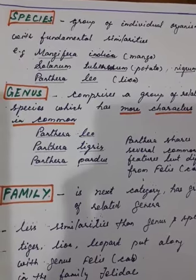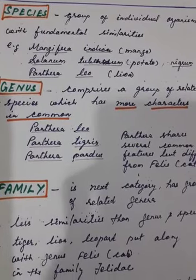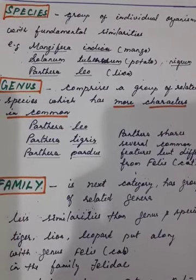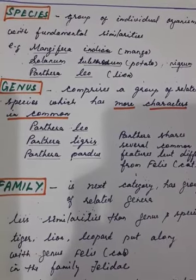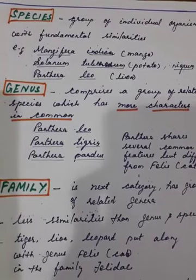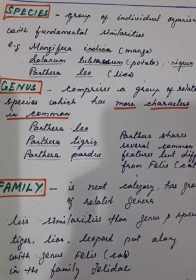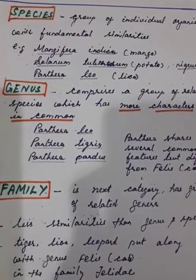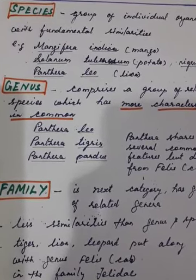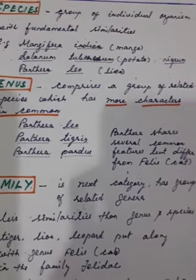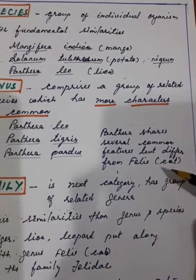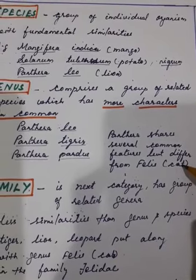The second category in taxonomic hierarchy is genus. Genus comprises a group of related species which share more characters in common. In biological nomenclature, the first epithet is the genus. For example: Panthera leo, Panthera tigris, Panthera pardus — lion, tiger, and leopard — all share several common features within the genus Panthera.